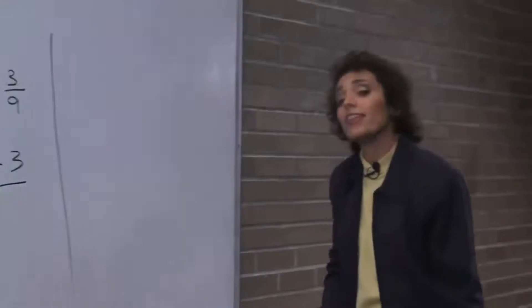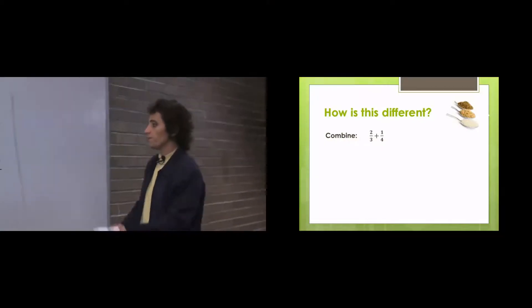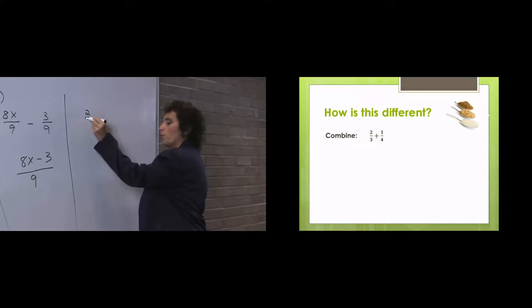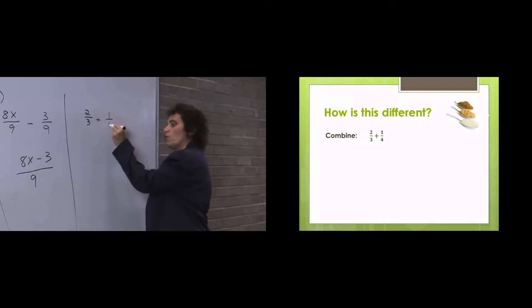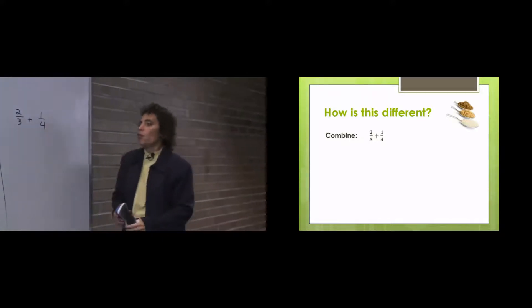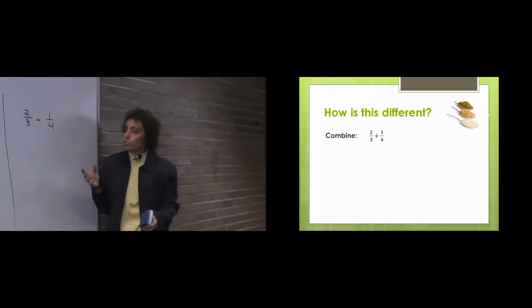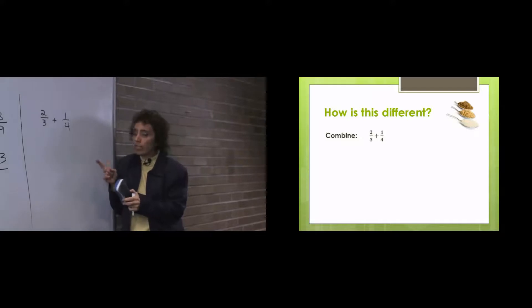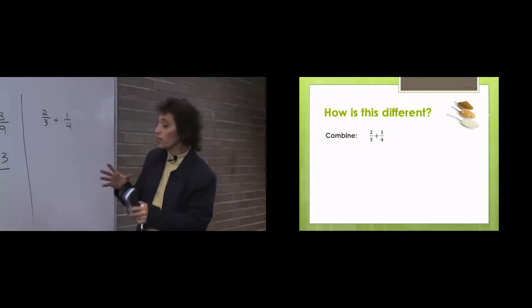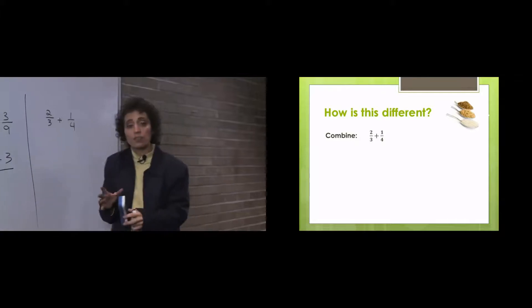Now, too easy, right? Let's try this: 2 thirds plus 1 fourth. We already showed you that the only way we can add fractions is if they have the same denominator. Well, these don't. So we have to find a way to get them to have the same denominator.